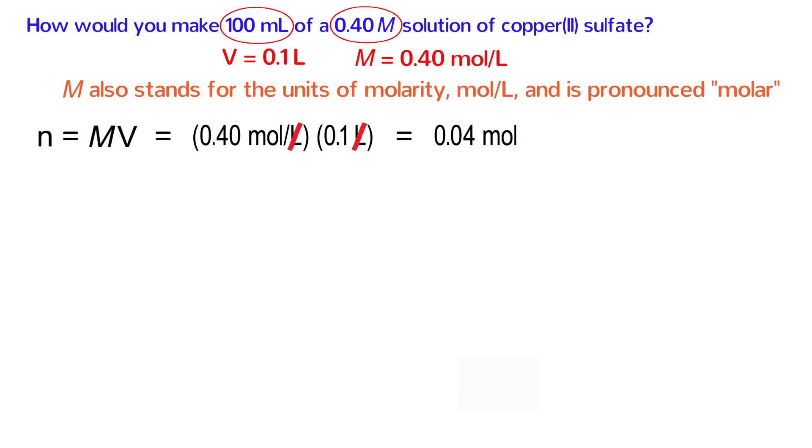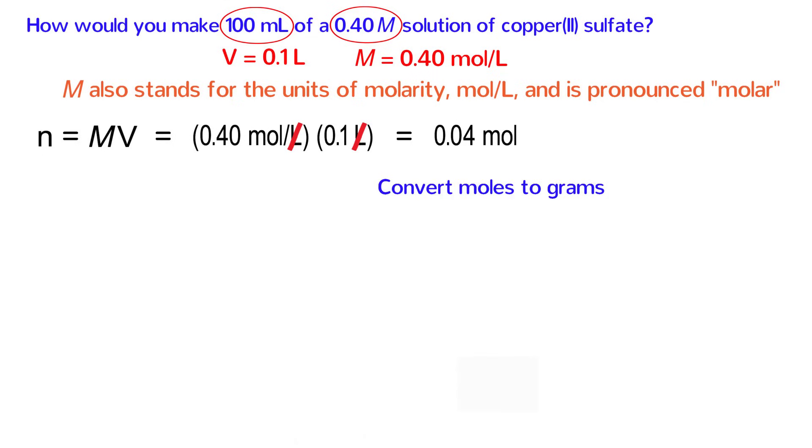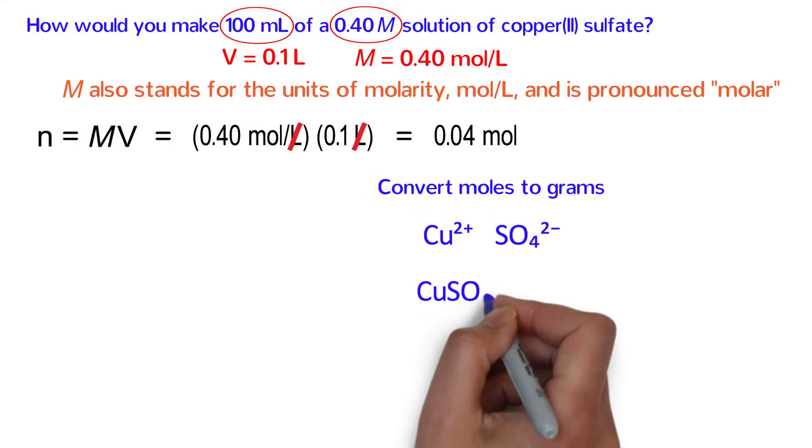But, if we are going to make this in the lab, we need to know how much CuSO4 sulfate to weigh out. So, we are going to convert the moles into grams. In order to do that, we need the molar mass, which is our conversion factor. The easiest thing to do would be to look at the chemical label, which almost always has the molar mass written on it. But let's suppose we can't do that. The Roman numeral II means that the copper has a plus-2 charge, and sulfate is SO4 2-. Because the charges are the same, the compound is simply CuSO4.